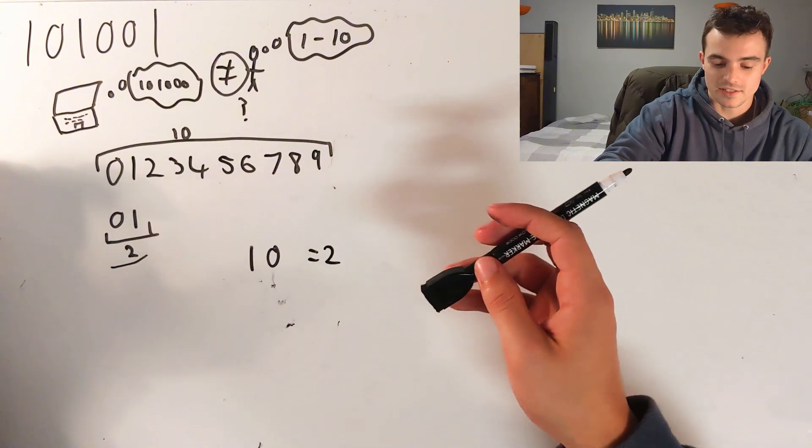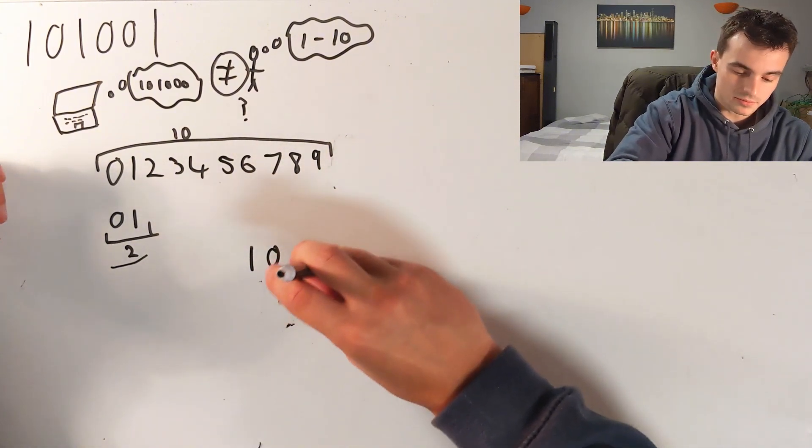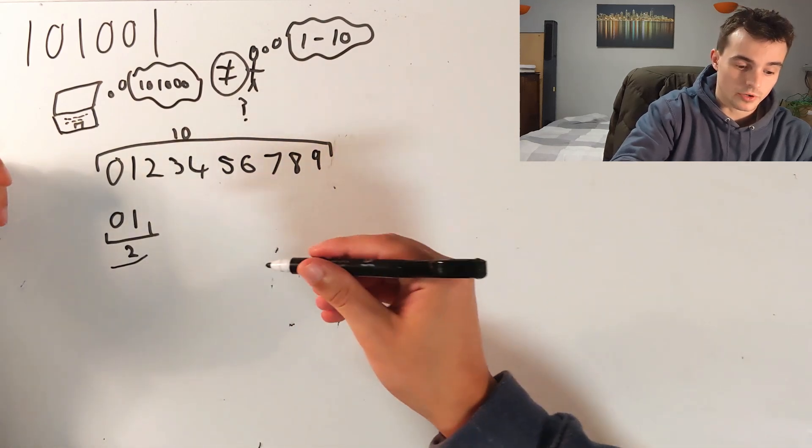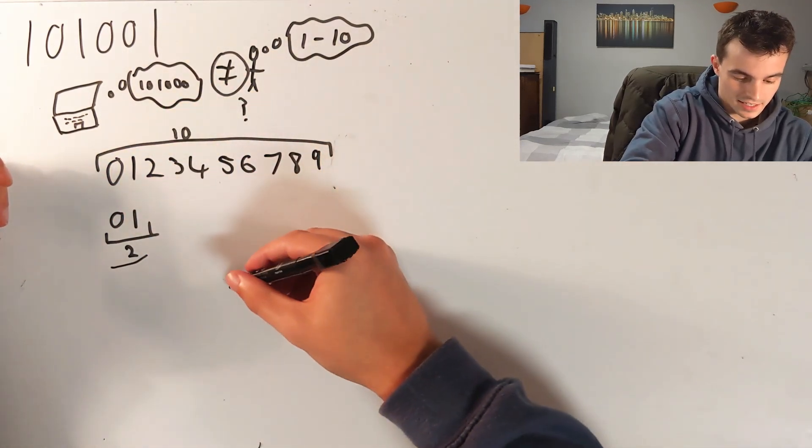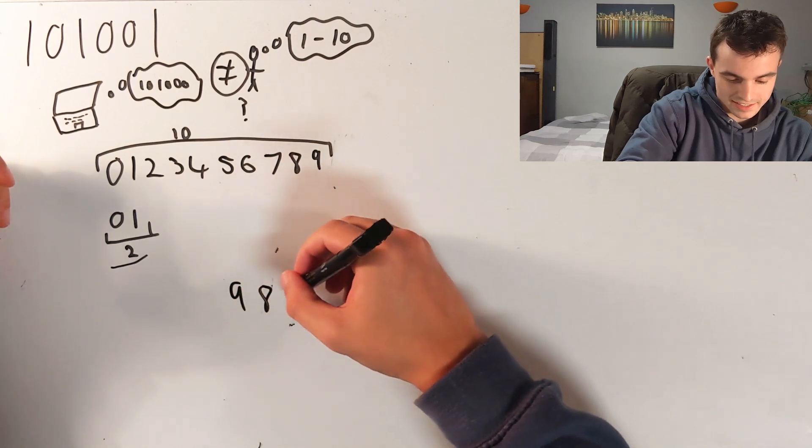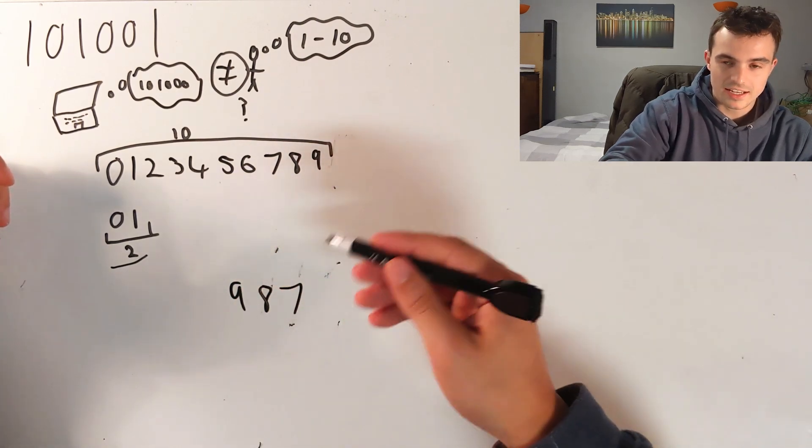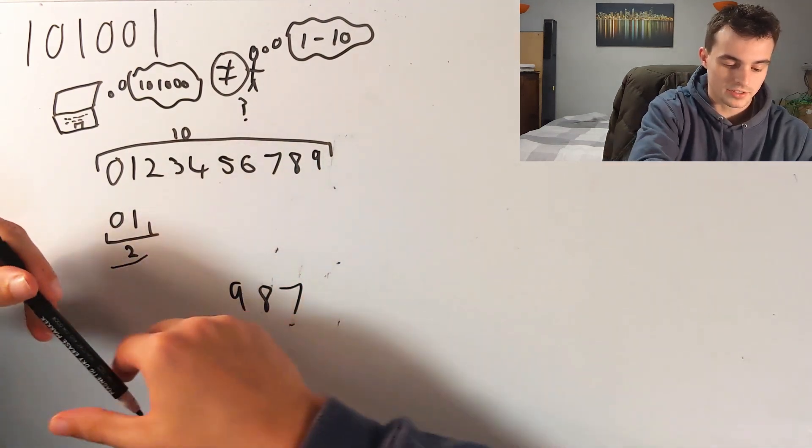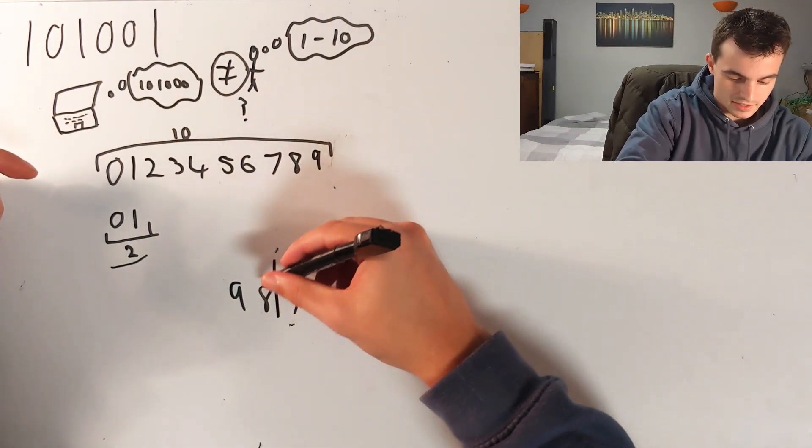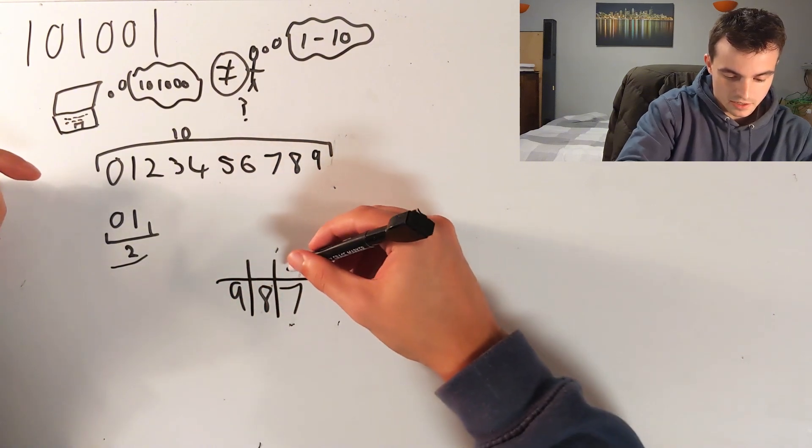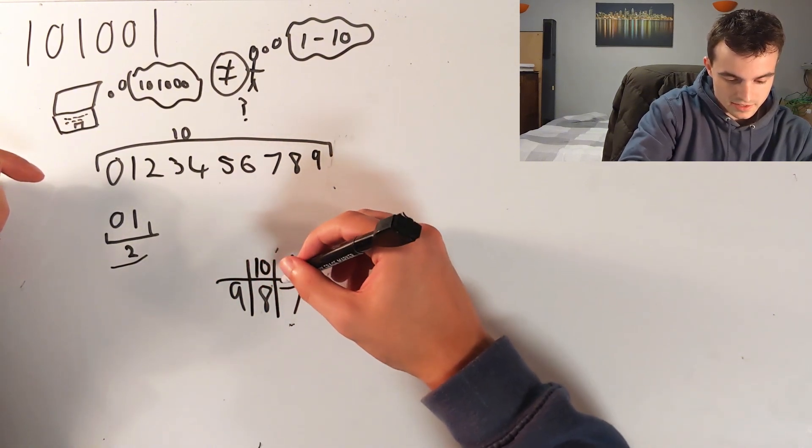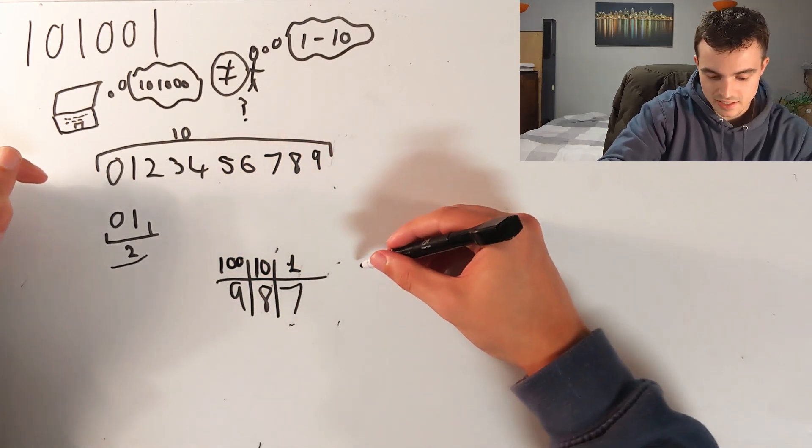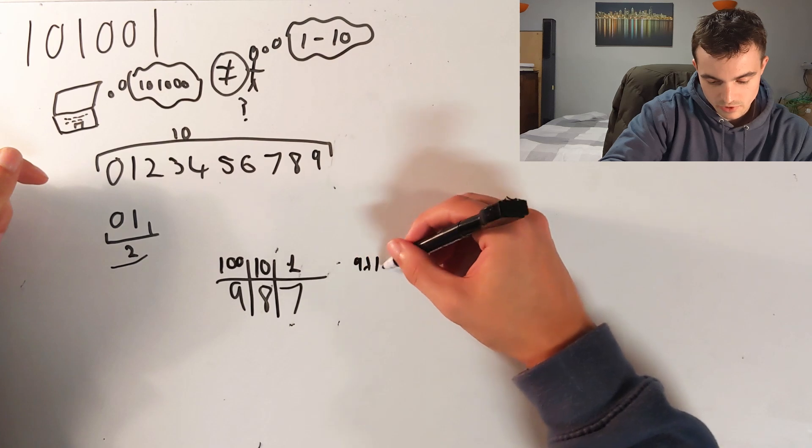So what we can see, actually, is that when we have a number in decimal, say nine hundred and eighty-seven, this number has three parts. It has ones, tens, and one-hundreds.